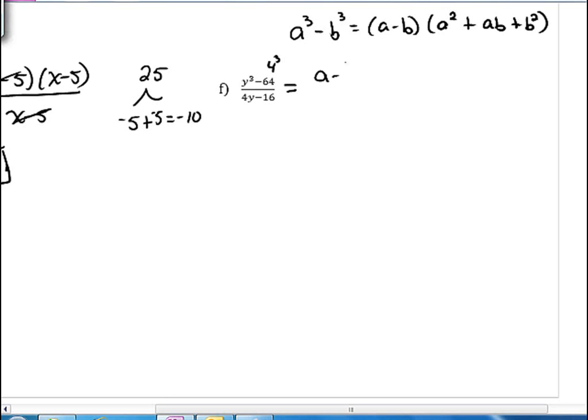It's going to be y minus 4. And then it's y squared, and then we change our sign to addition and multiply y and 4 together, so we get 4y in the middle. Then we square the 4, so that's plus 16 in this last term. Remember, it's always positive.